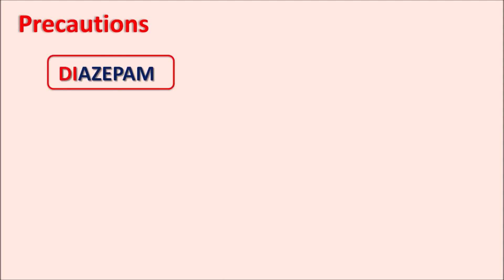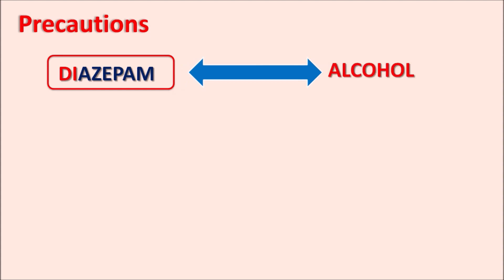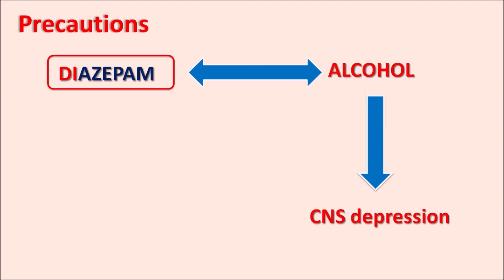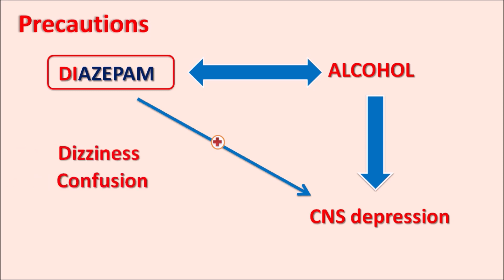One important precaution of diazepam is that this drug should be carefully given in alcoholic patients. An interaction exists between diazepam and alcohol: alcohol generally produces CNS depression, and this CNS depression is further increased by use of diazepam. This combination may result in serious CNS depression effects such as dizziness, confusion, coma, and even death of the patient. These two should never be combined.